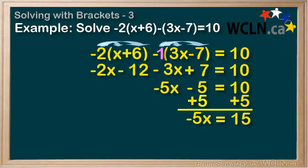Now we'll divide both sides by negative 5. And that leaves us with x on the left. And 15 divided by negative 5 is negative 3 on the right. So our solution is negative 3.